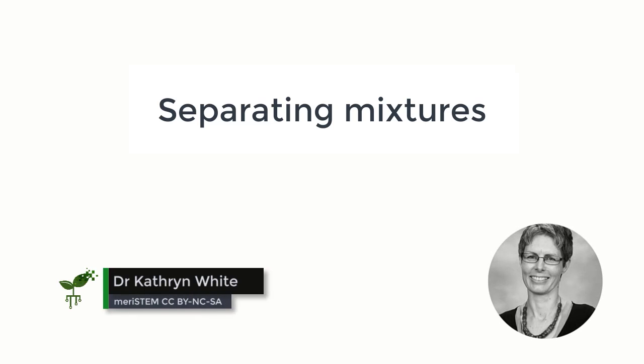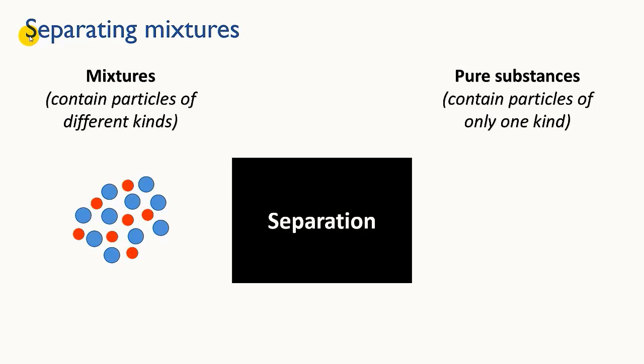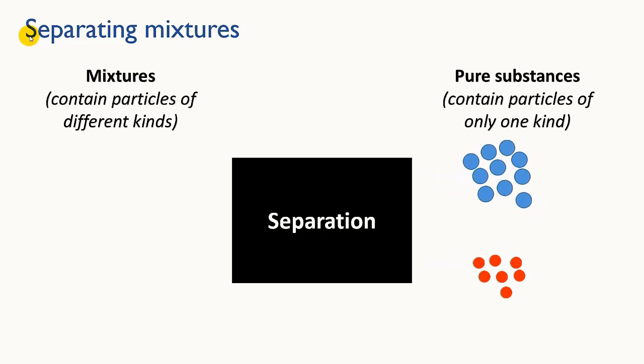In a previous video, we looked at pure substances and mixtures. Mixtures are made by combining pure substances in various ways, but sometimes you have a mixture and you want to do some kind of separation on it so that you can retrieve the pure substances from it. In this video, we'll look at various ways that you can separate mixtures by making use of the physical properties of the things that are in the mixtures.